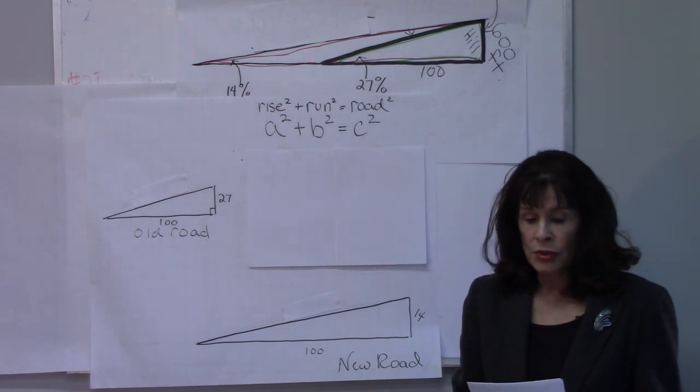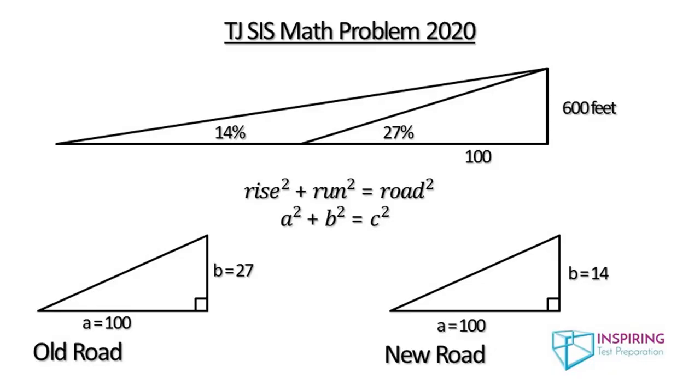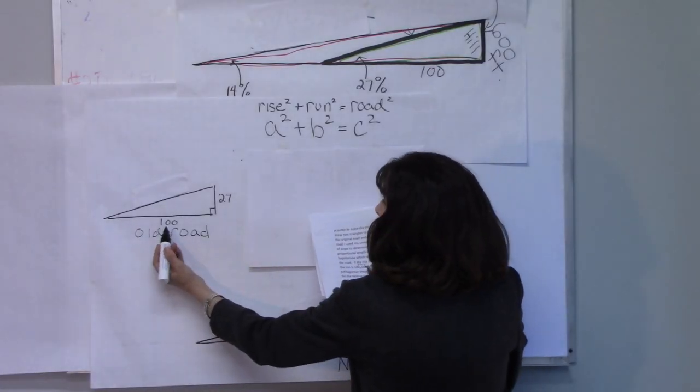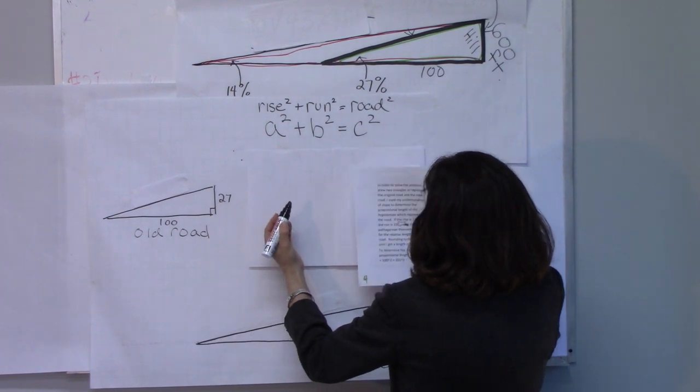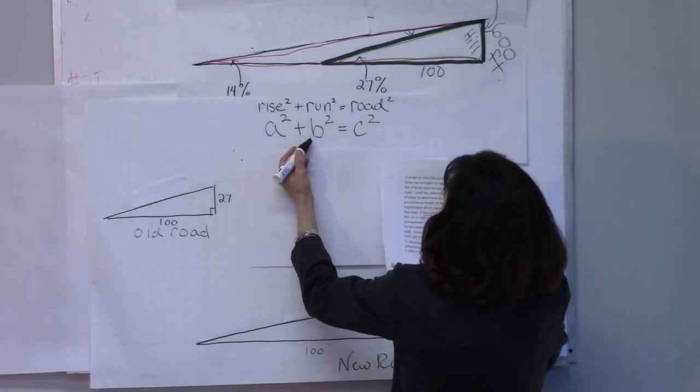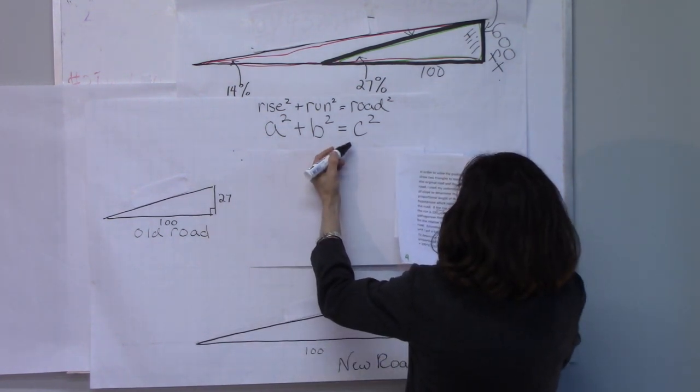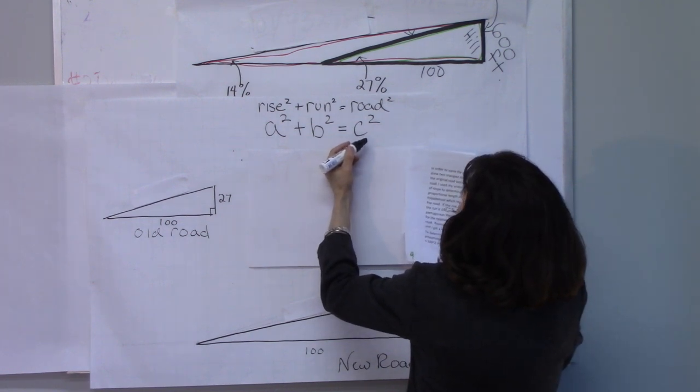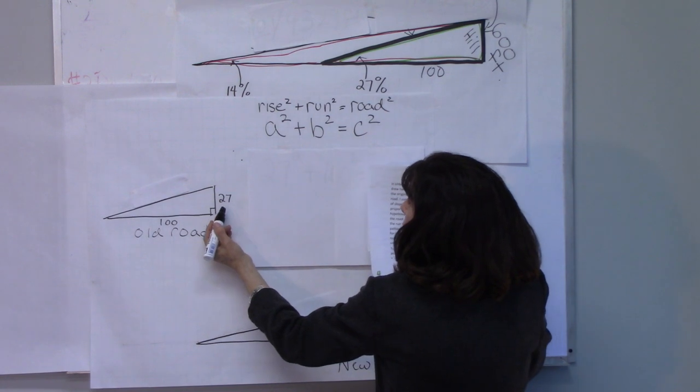In order to solve the problem, I drew two triangles to represent the original road and the new road. I used my understanding of slope to determine the proportional length of the hypotenuse which represents the road. If the rise is 27 and the run is 100, we can use the Pythagorean theorem, a squared plus b squared equals c squared, in order to determine the length of the road relative to 27 and 100.